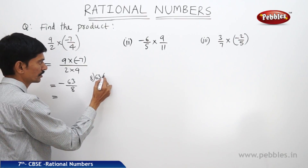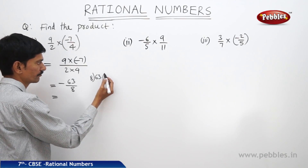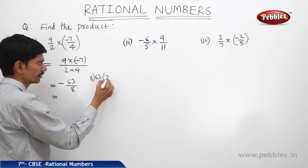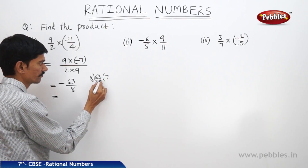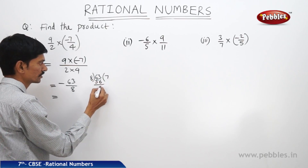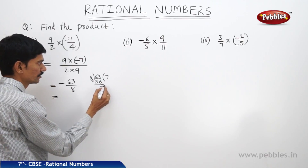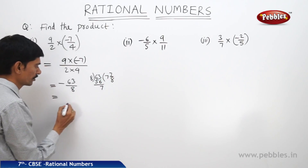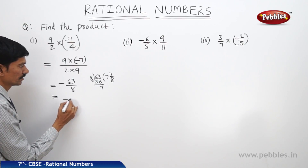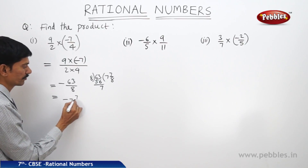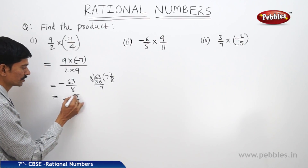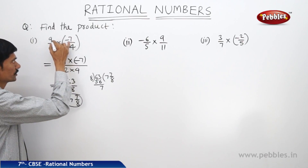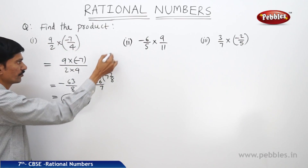8 eights are 64 but it is not divisible, so we take 8 sevens are 56. Then 63 minus 56 is 7. So this can be written as 7 by 8 remainder, giving minus 7 7 by 8. This is the product of the two rational numbers 9 by 2 and minus 7 by 4.